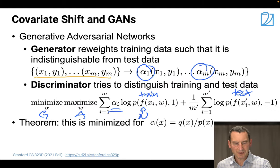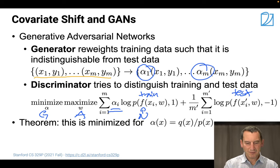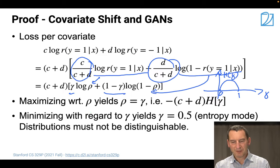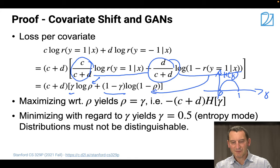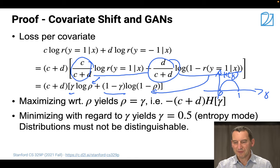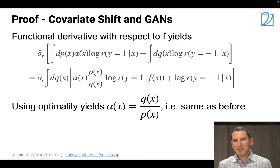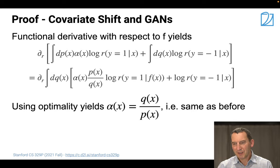Going back to the slides: here we have the adversary, and here we have the network. We showed that the best the adversary can do is hunt for the entropy mode at one half. Using optimality, once you've worked this all through, gives us alpha equals q over p - which is exactly what we had before. It just means that if I use a GAN, I'll get the same answers as from the classifier and from probability theory.